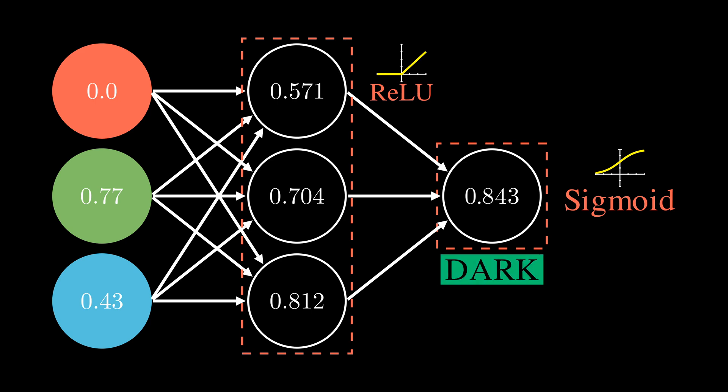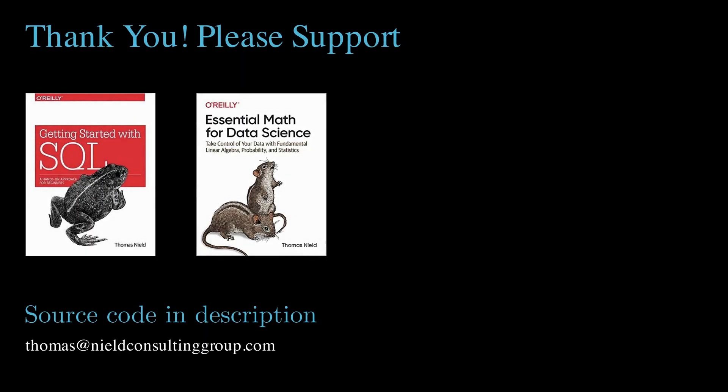Thank you for watching. I hope you enjoyed this video. Chapter 7 of my book, Essential Math for Data Science, walks through how to create this neural network completely from scratch. This also includes how to solve the weight and bias values using stochastic gradient descent and back propagation. Links to the books and animation source code are in the description. See you next time.